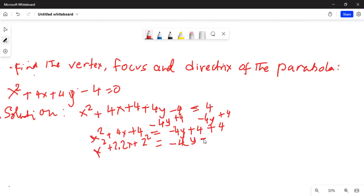So x square plus 4y minus 2. This will be x plus 2 square is equal to minus 4y minus 2.